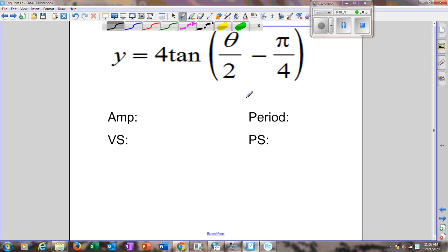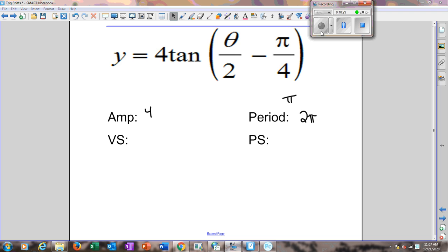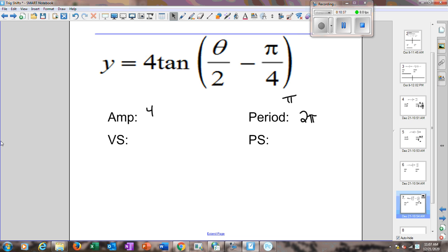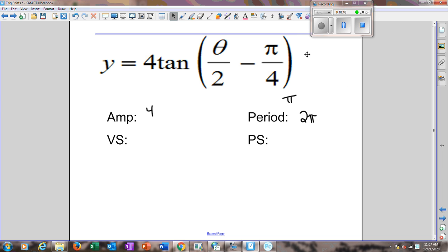And then this is already theta over 2. So instead of being π, it's now π divided by 1 half, which actually gives us 2π for a period for this. The amplitude is 4, but we don't really say amplitude for tangent functions. Because that amplitude really only affects whenever we're looking at the sine and cosine functions.